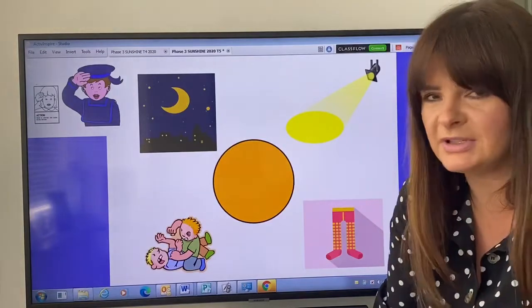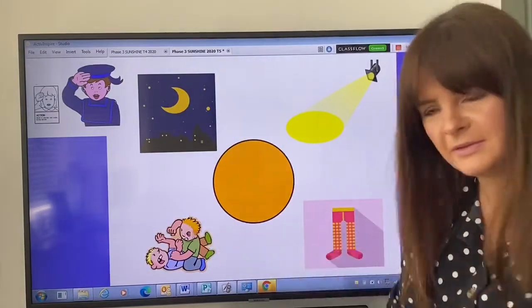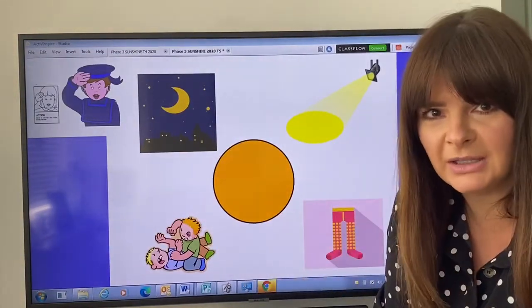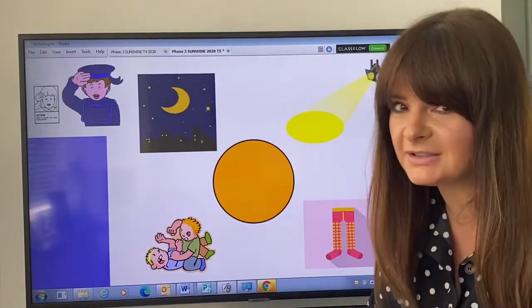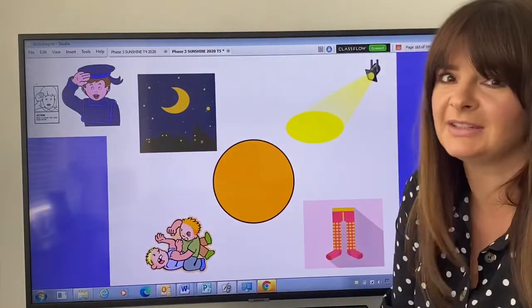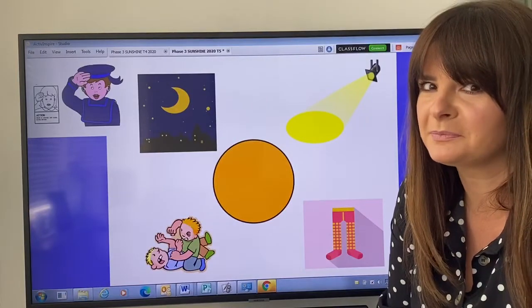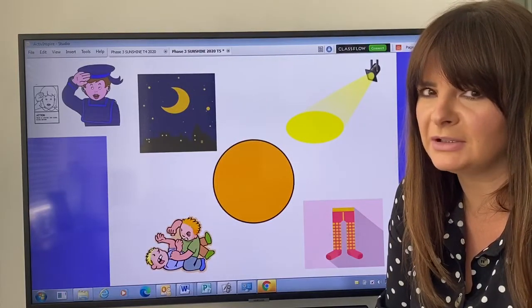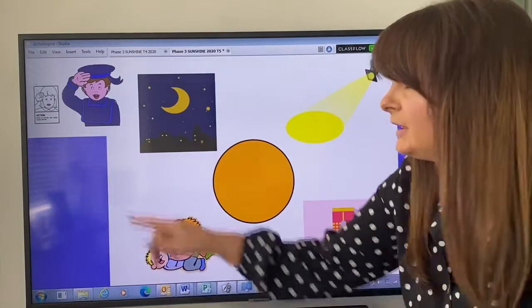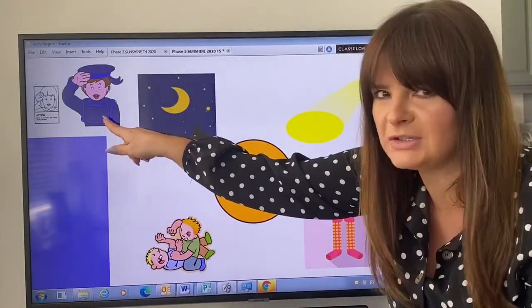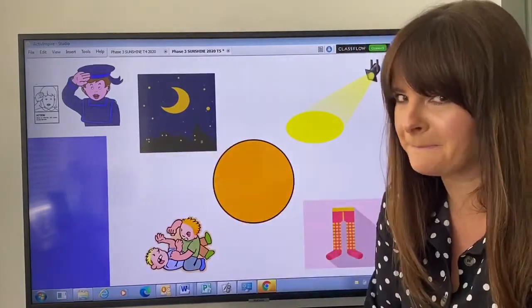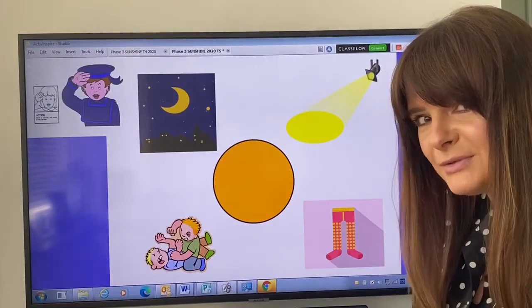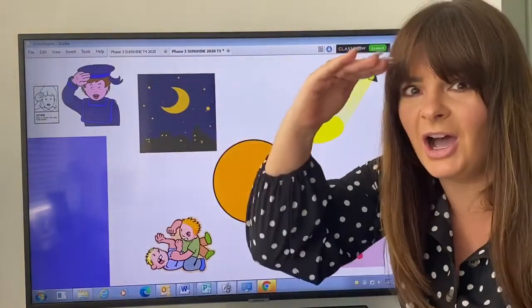There is a sound in each of these words that's the same. So I'm going to say them again. Night, fight, tights, and light. Which sound in the middle of those words can you hear? There is a clue just there. This is a picture to help you. Can you think? Yeah, that's right. It's i. I, I, Captain.